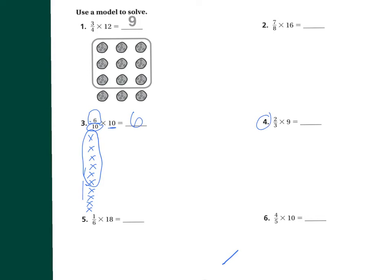Let's do number four. I need to make three groups and I've got to go to nine: one through nine. Of them, I need to circle two groups. So I'm going to circle two groups. How many do I have? One through six. My answer is six.